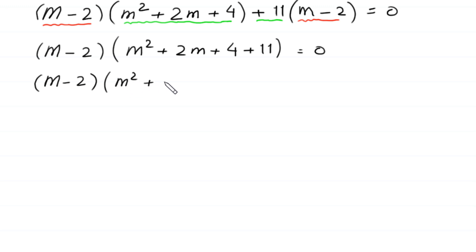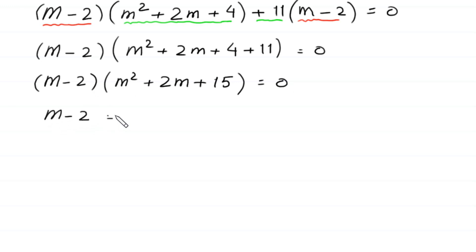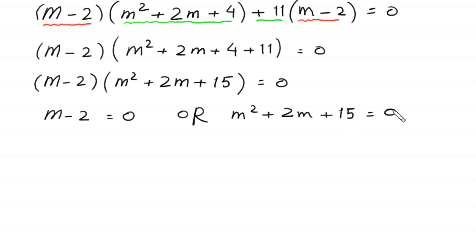This simplifies to (m minus 2) times (m squared plus 2m plus 15) equals 0. From here, either m minus 2 equals 0, giving our first solution m equals 2, or m squared plus 2m plus 15 equals 0. To find the other two values, we solve this quadratic equation.